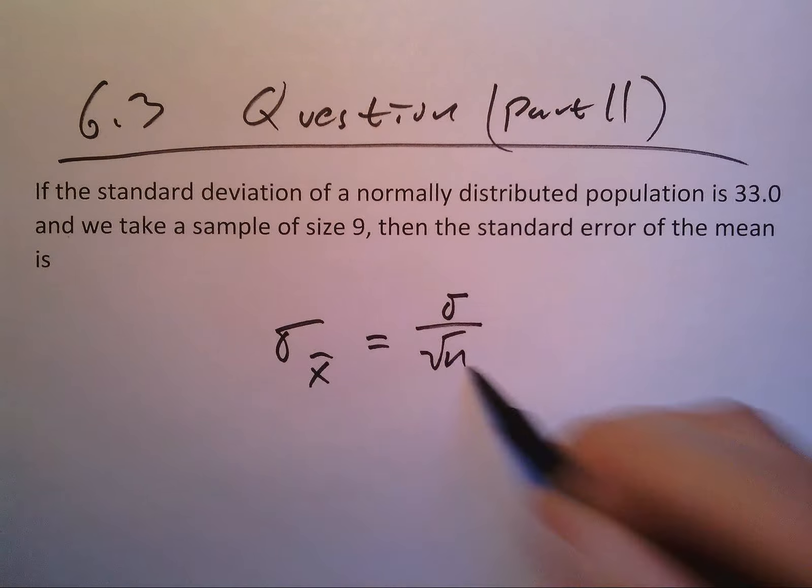Now let's just plug in what we have. This is going to be 33 divided by the square root of 9. So what we end up with is 33 divided by 3, which equals 11. That's it.